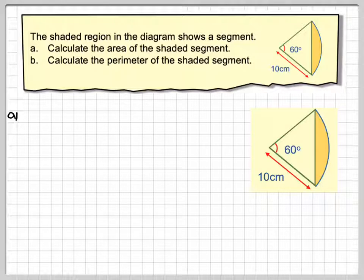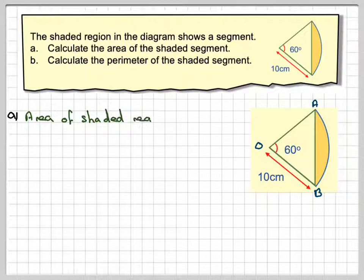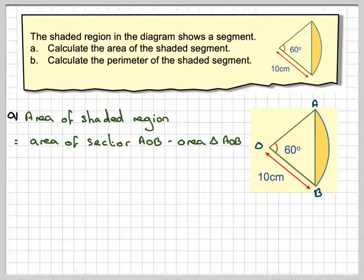So, in part A, if we take the diagram, what we've got here is a sector and a triangle. So if we can find the area of the sector and take away the area of the triangle, then we can get the area of the shaded region. So we'll label the sides OAB, AOB. So the area of the shaded region is going to be the area of sector AOB minus the area of triangle AOB.